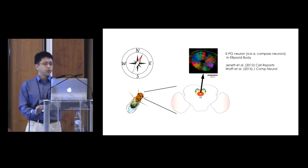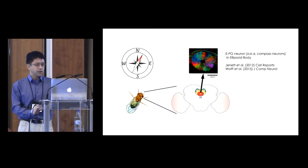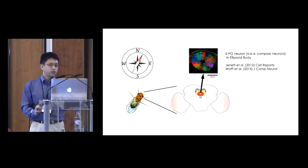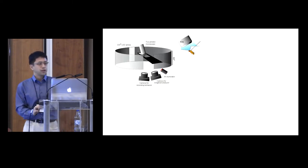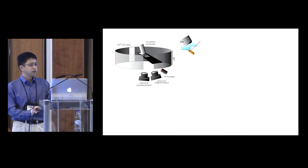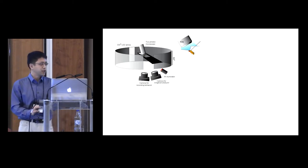In a toroidal shaped structure called ellipsoid body, there is a set of neurons we call compass neurons that together tile the ellipsoid body. We recorded the activity of the entire population of the compass neurons from the tethered flying fly in a virtual reality arena.